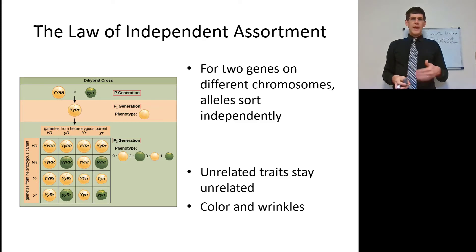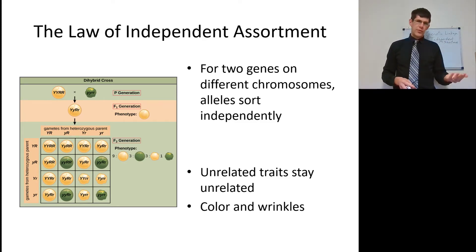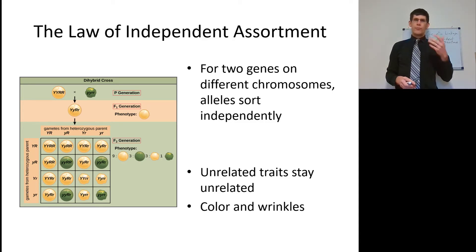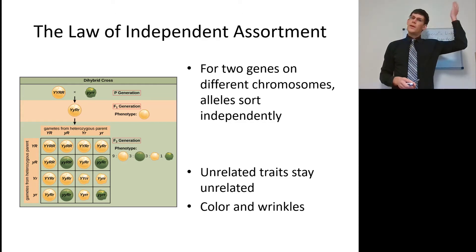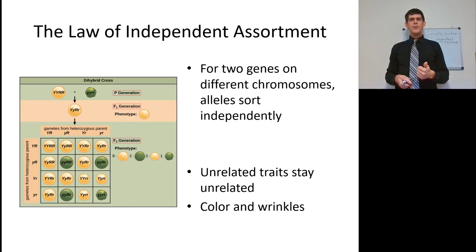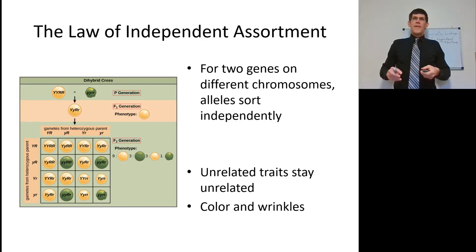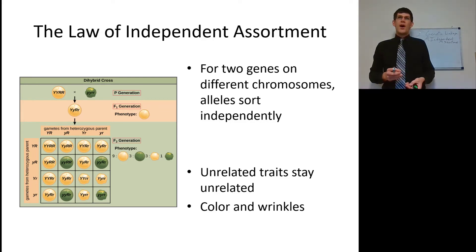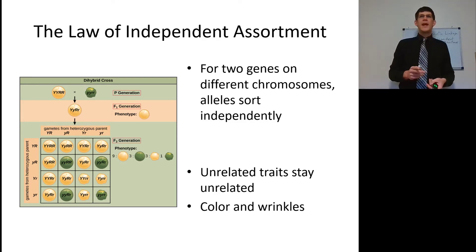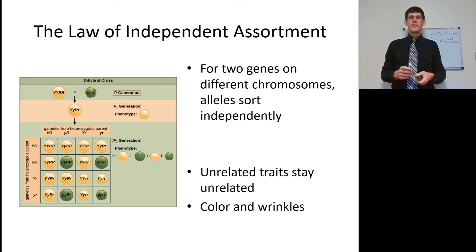Independent assortment: we have one of the pea plants with colored peas — either green, which is recessive, or yellow, which is dominant; and either round, which is dominant, or wrinkled, which is recessive. We would assume under general conditions that you get a 9 to 3 to 3 to 1 ratio if you perform a dihybrid cross on these. That 9:3:3:1 means they are assorting independently and following the laws of dominance — Mendelian. But it's not always true.